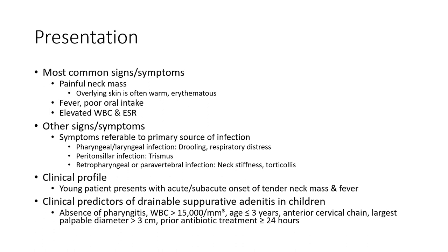Additional clinical predictors include: white blood cell count more than 15,000 per cubic millimeter, age less than two to three years, unilateral involvement of cervical chains, large node diameter more than 3 cm, and pre-antibiotic treatment for more than 24 hours.